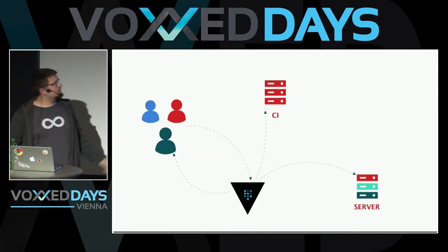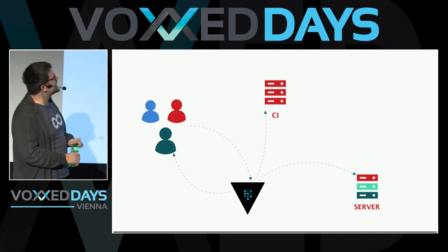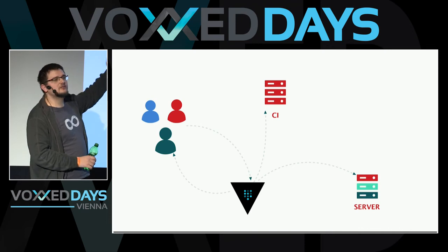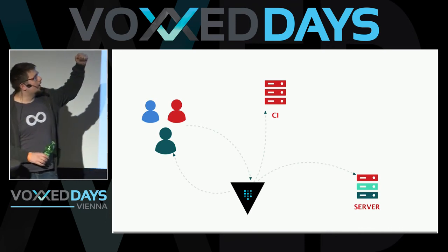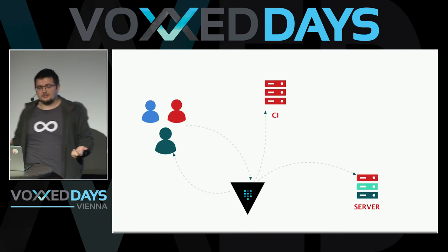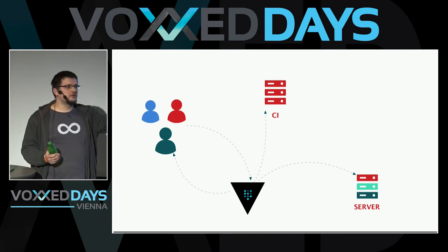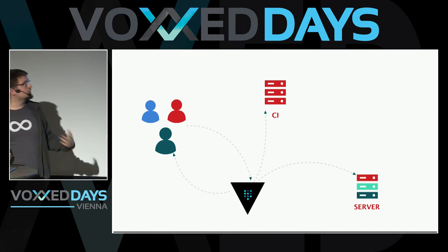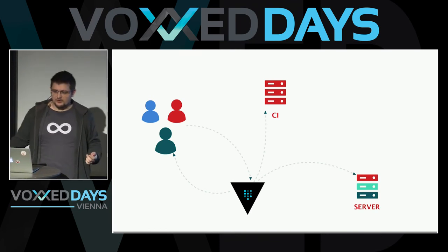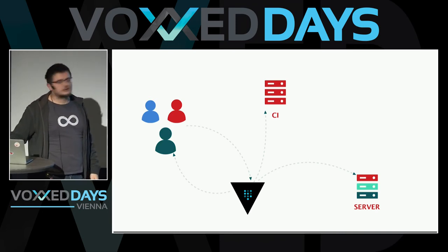To visualize the overall architecture: all developers can read and write from Vault, while servers and CI services mainly only need to do reads. Before each build, you download the secrets. Before every deploy, you download the secrets so your app can run.